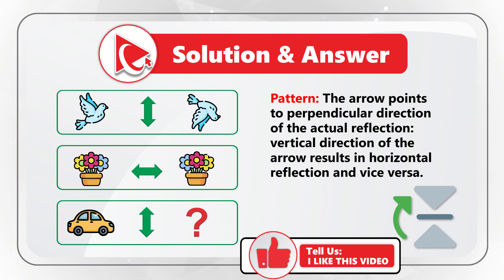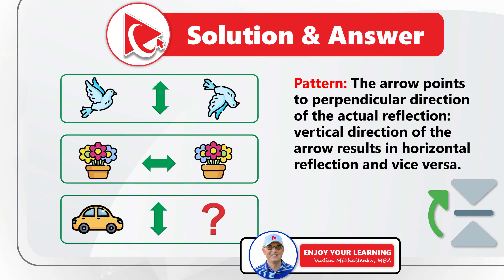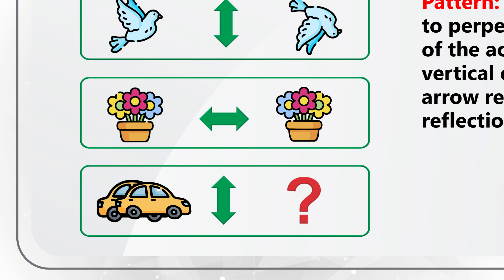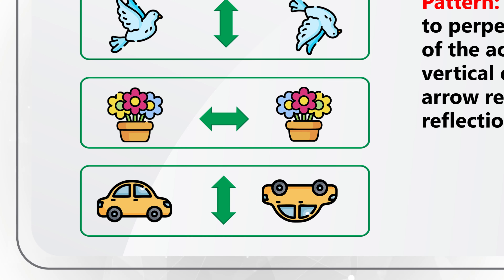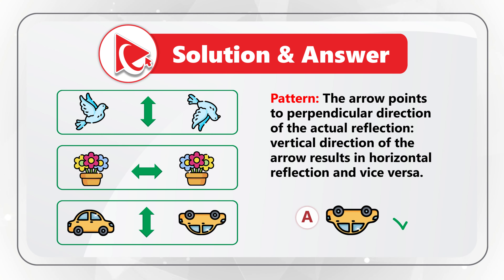For example, a vertical direction of the arrow results in horizontal reflection and vice versa. Looking at the third row: because the arrow goes from top to bottom, we need to use horizontal reflection, which means the correct answer here is choice A. Did you get to the same answer? If not, please make sure to post your answer and rationale in comments.